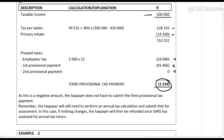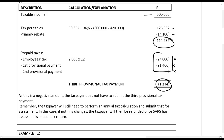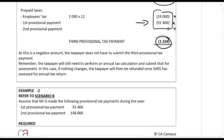This gives us a negative amount. Now, this negative amount is not a refund because this is provisional tax — you only get refunded on your assessment, your final tax for the year. So in this case, there won't be a third provisional tax payment. This taxpayer's total tax for the year is R114,232, but the taxpayer has already paid more than that. So this taxpayer does not need to pay a third provisional tax payment — there will be no penalties, no issue, because this taxpayer has already paid enough taxes over the year.